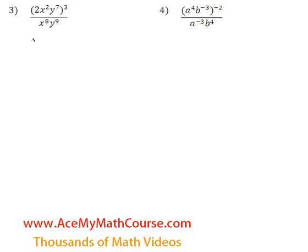So we have 2 cubed, which is just 8. x squared cubed - we're just going to need to multiply the 2 by the 3. We get x to the power of 6.